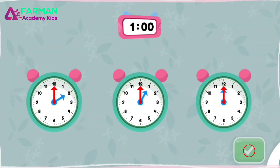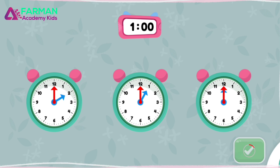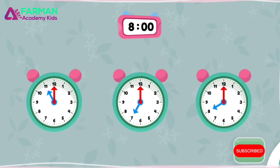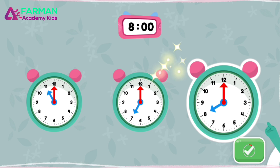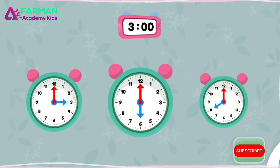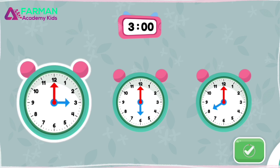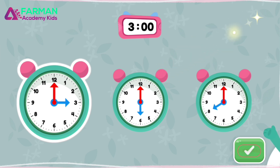Look at the time on the pink clock on top. Which green round clock says the same time? Yay! That clock shows one o'clock. Tap the green clock that says eight o'clock. That clock shows eight o'clock. Tap the green clock that says three o'clock. Sweet! That clock shows three o'clock.